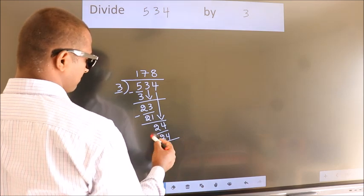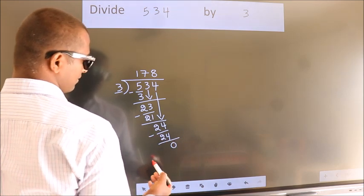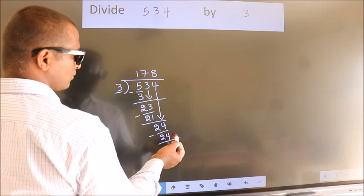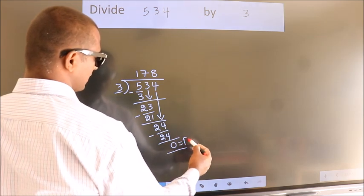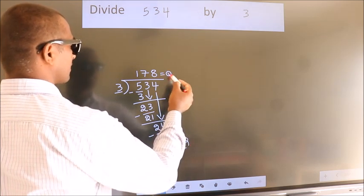Now we subtract, we get 0. No more numbers to bring down, so we stop here. This is our remainder, this is our quotient.